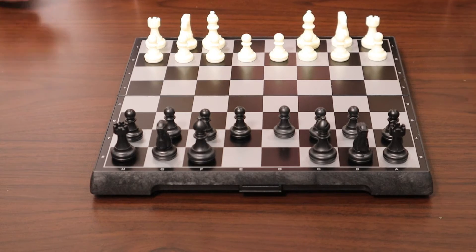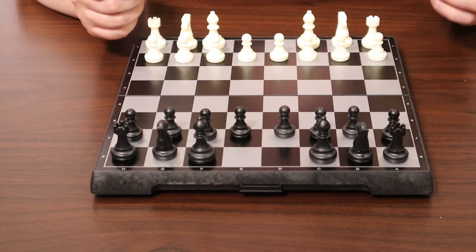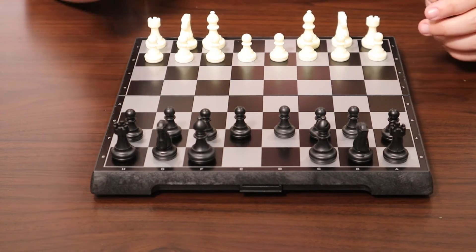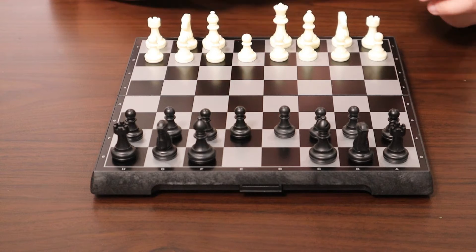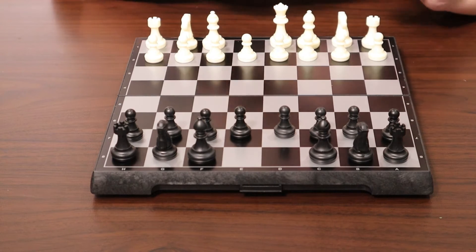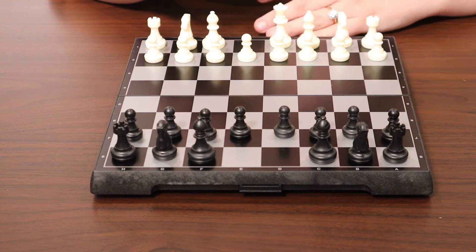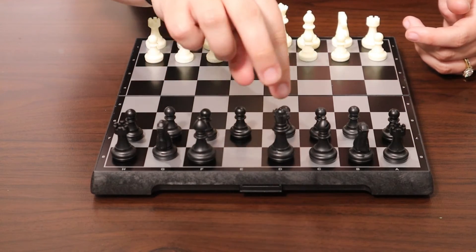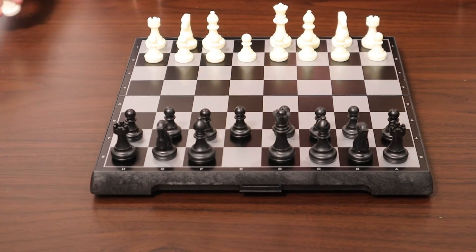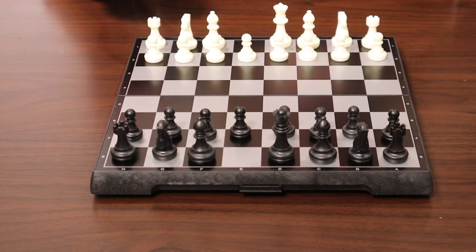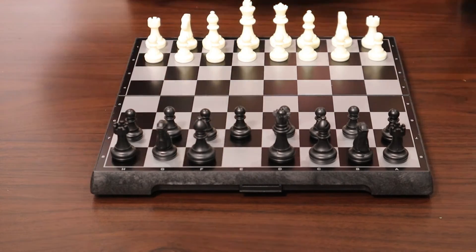And then one rule about setting up your chess set is that the queen always goes on her own color. So the white queen will go on the white square, or the lighter square, because sometimes the boards are not black and white. And the black queen will go on the black square. And then the king will go next to his queen.